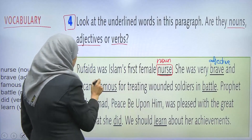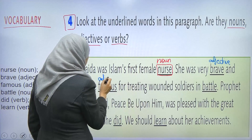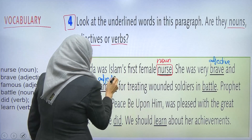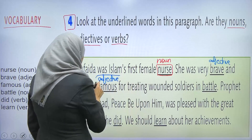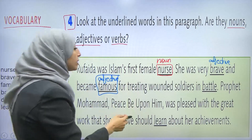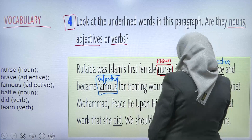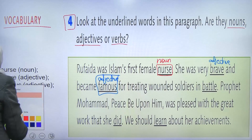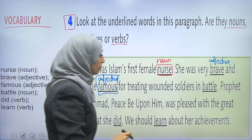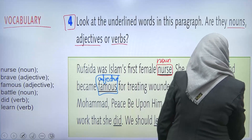Famous is an adjective as well. أصبحت مشهورة. Right? Adjective. Now, for treating wounded soldiers in battle. The word 'battle' here is a noun. لأنه معركة. أحنا منحكي. Noun. تمام?